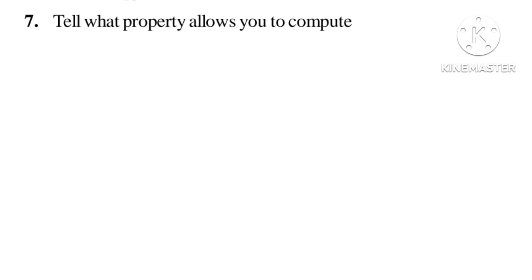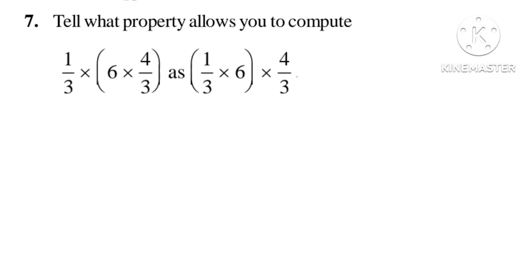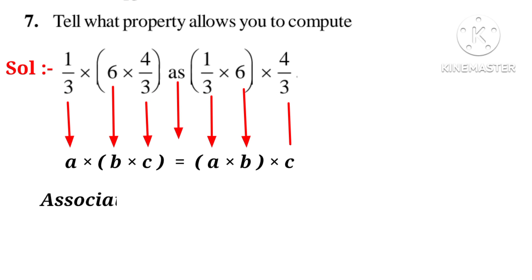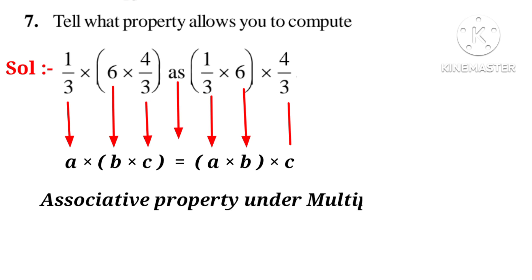Now let us do the seventh problem: tell what property allows you to compute 1 by 3 into (6 into 4 by 3) as (1 by 3 into 6) into 4 by 3. Solution: writing A equals 1 by 3, B equals 6, C equals 4 by 3, we get A into (B into C) equals (A into B) into C. It is called the associative property under multiplication.